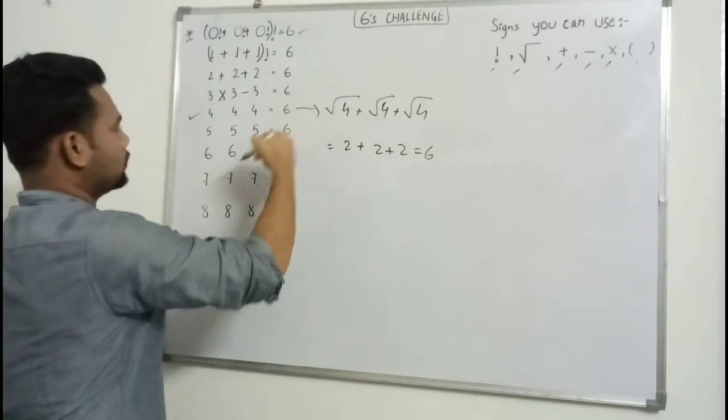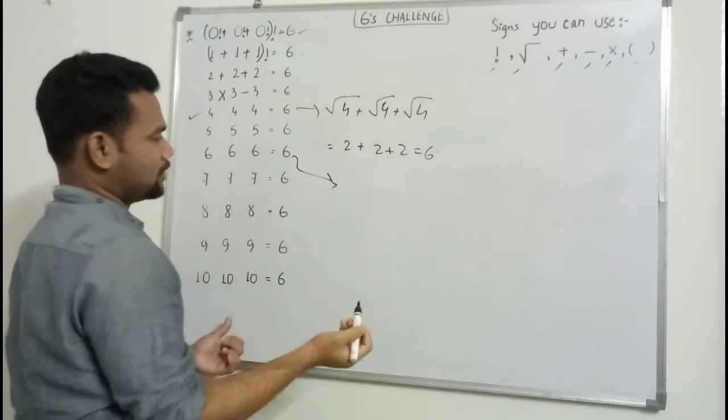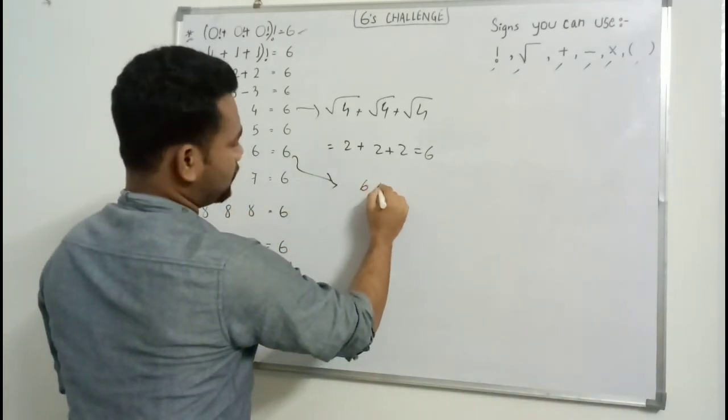And then if we follow up six, six is also very easy. Six plus six minus six gives us six.